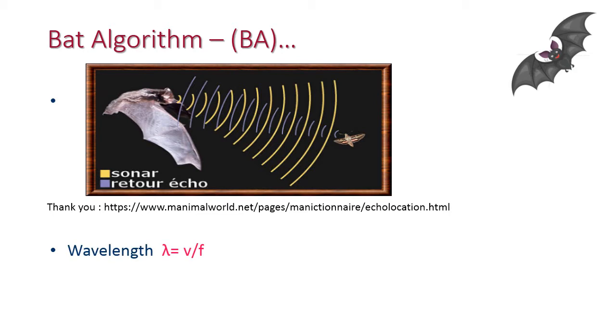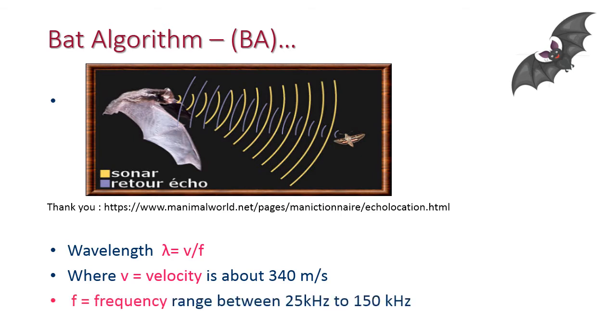Based on this, we have to calculate the wavelength lambda equals v by f, where v is velocity, about 340 meters per second, and f is frequency. The frequency is very high frequency here, the range is between 25 kilohertz to 150 kilohertz, which we cannot hear because the human hearable frequency ranges from 20 hertz to 20 kilohertz.